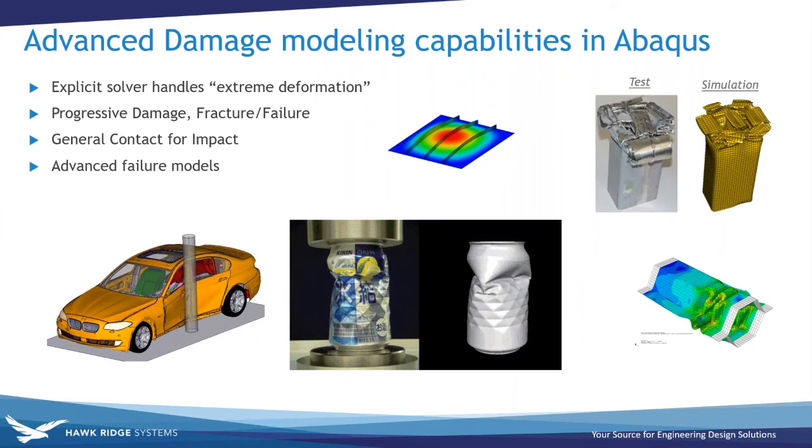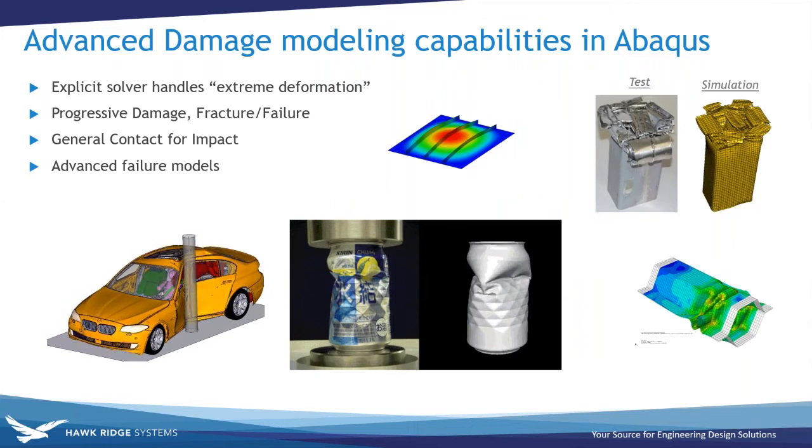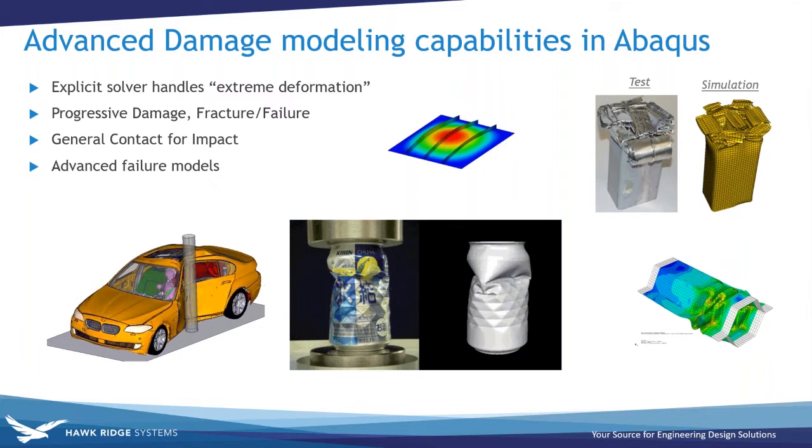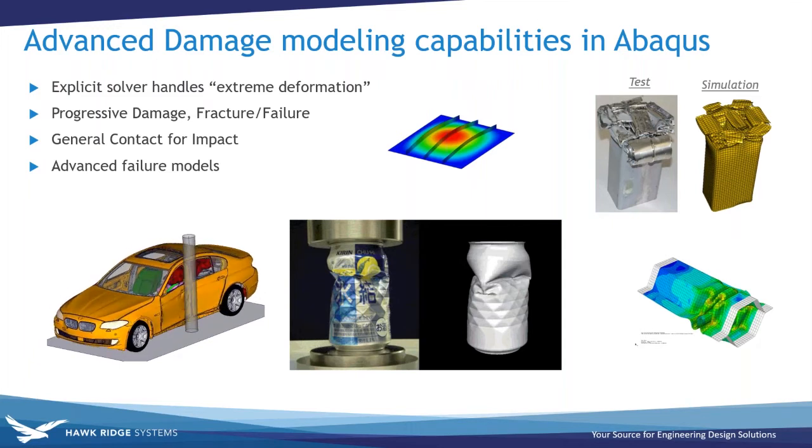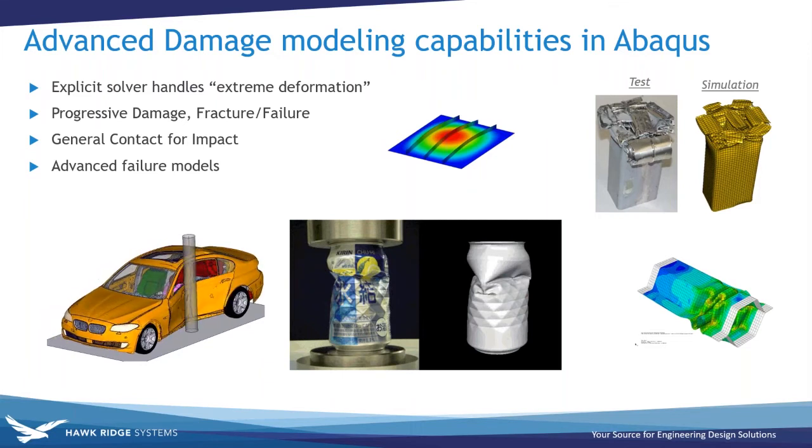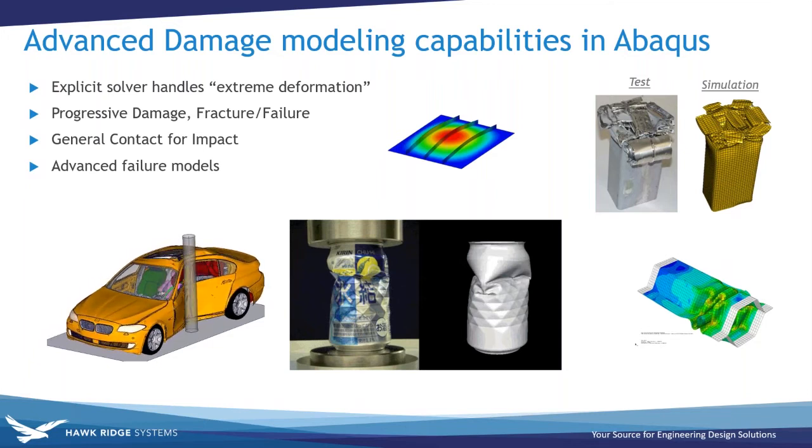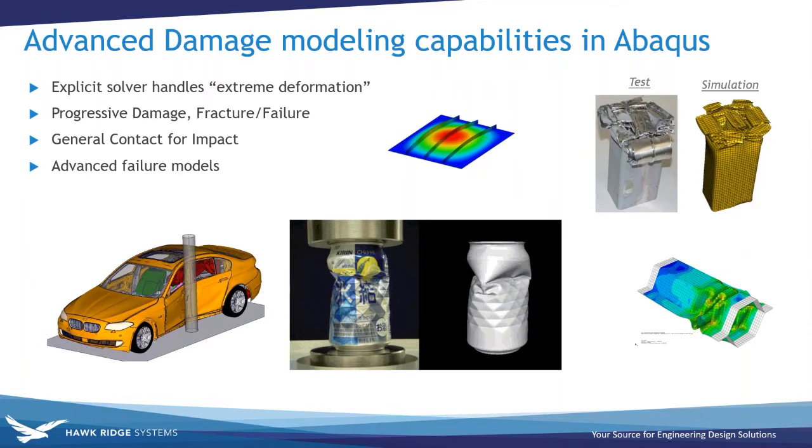Some of the reasons that we go to Abaqus for advanced damage models and for simulating these impact events is that it has what we call an explicit solver. This is a solver well suited for extreme deformation events like forming or collapse buckling loads. Some of the material capabilities built into Abaqus are progressive damage and failure and fracture models. There is a general contact algorithm which allows to detect for contact between any elements in the model, and these advanced failure models where you can either use material test data directly or you can enter parameters as you've gathered this advanced material information.